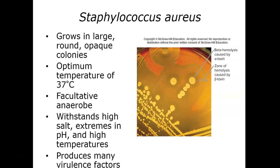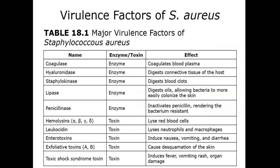Staphylococcus aureus produces many virulence factors. It's really important for you to understand what the various toxins and enzymes these microorganisms use as virulence factors do to the host cell — that will be on our third exam. Anytime you're dealing with an enzyme, it ends with the suffix '-ase.' Make sure you know the name and what the effect is on the host cell.